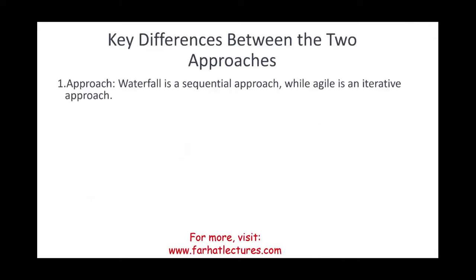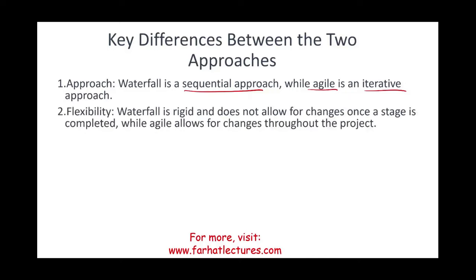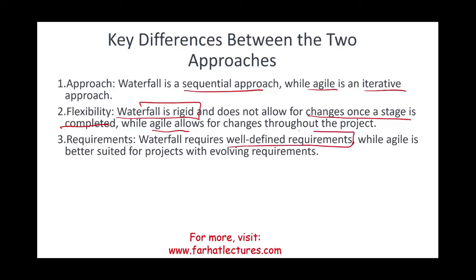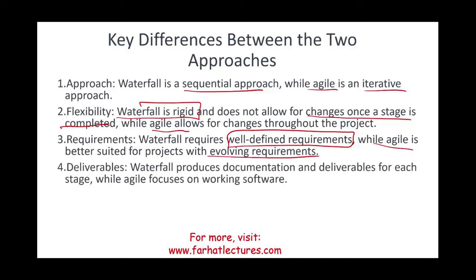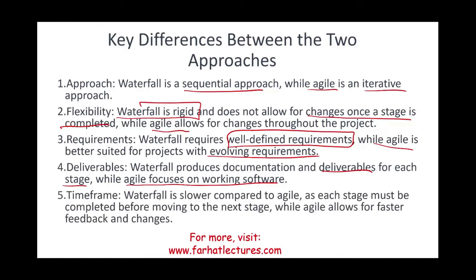Let's summarize the key differences between the two. When it comes to approach, waterfall is sequential while agile is iterative. When it comes to flexibility, waterfall is rigid and does not allow for changes once a stage is completed, while agile allows for changes throughout the project. For requirements, waterfall requires well-defined requirements from the start, while agile is better suited for evolving and changing requirements. For deliverables, waterfall produces documentation with specific deliverables for each stage, while agile focuses on workable software subject to change. The time frame is also different — waterfall is slower since each stage must be completed before moving on, while agile allows for faster feedback and iteration.